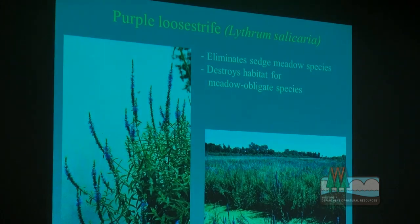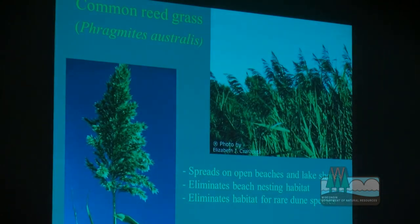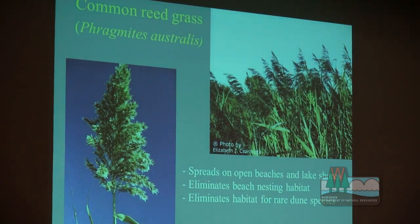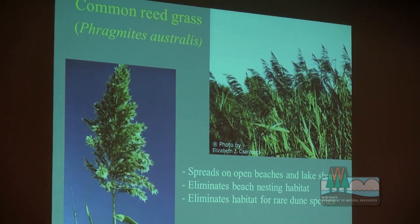Purple loosestrife obviously displaces a lot of sedge meadow species, so any birds obligate to that sedge meadow habitat will be lost as well, along with the insects the birds feed on. Phragmites is expanding at a phenomenal rate. Here in Green Bay you've had it for a long time, but it's now spreading to the rest of the coastal areas and moving inland. It's really eliminating marsh habitat, beach habitat, and interdunal areas that could be nesting habitat for many birds. As lake levels lower, we're seeing expanded amounts of Phragmites.